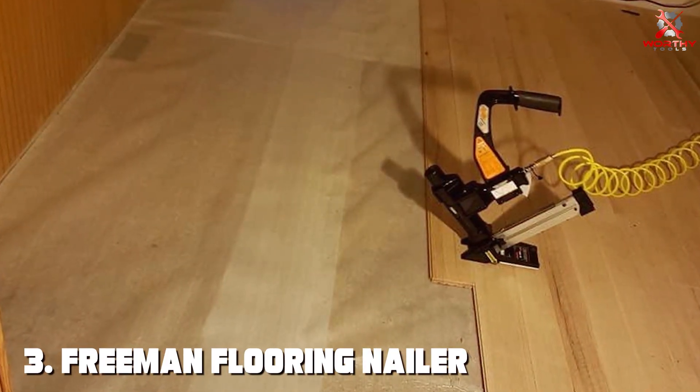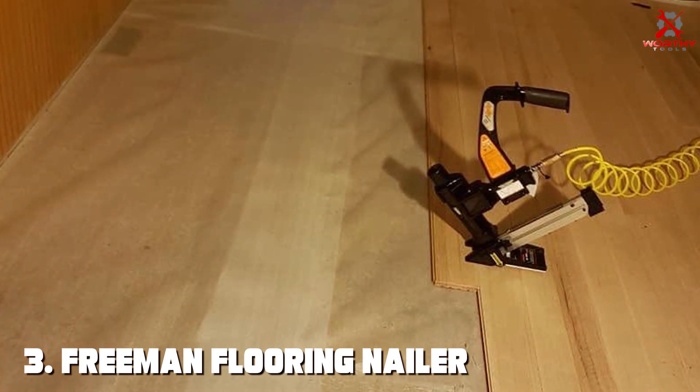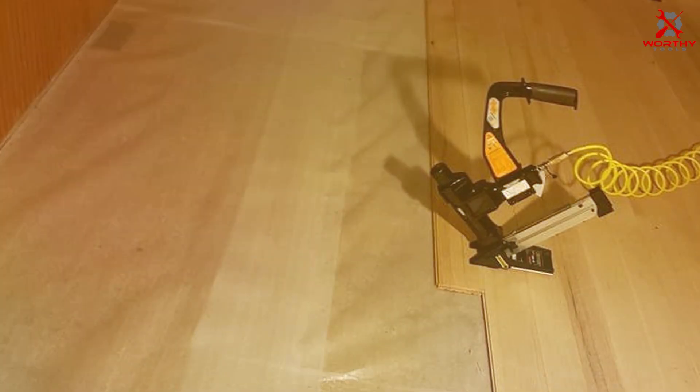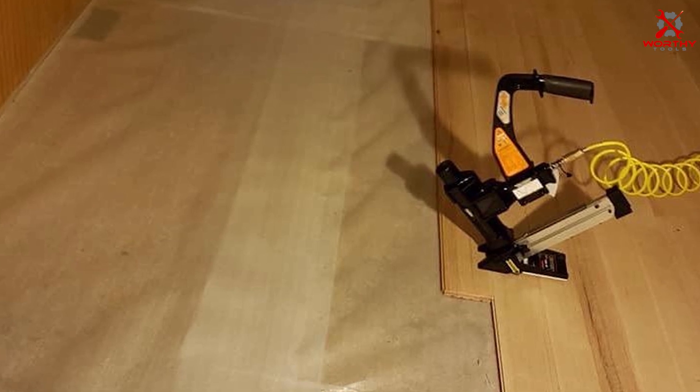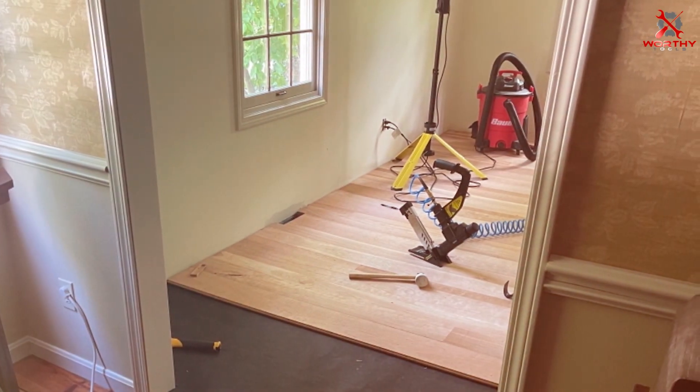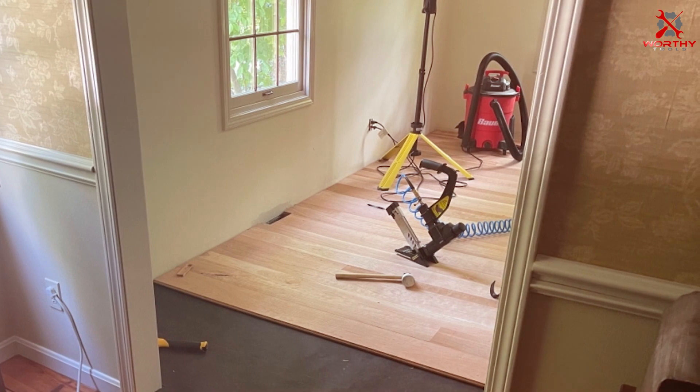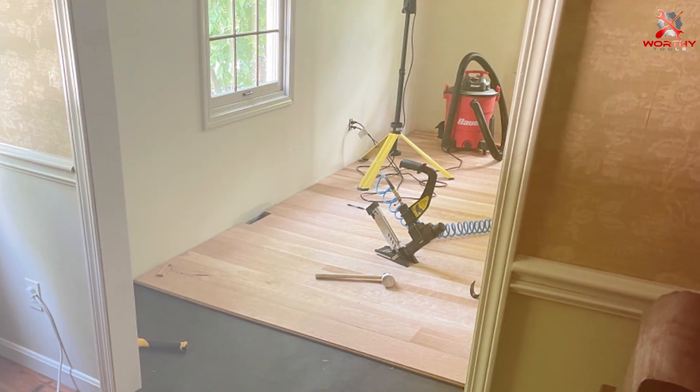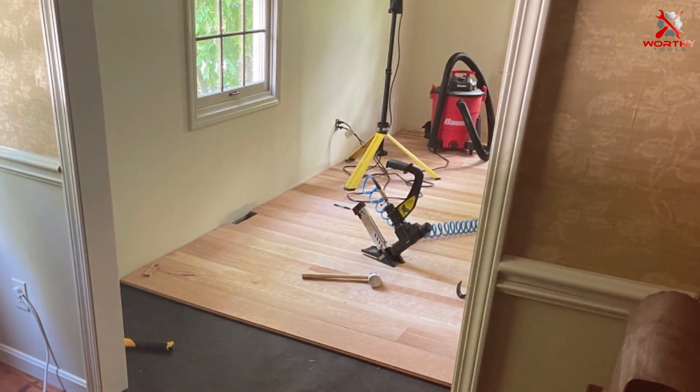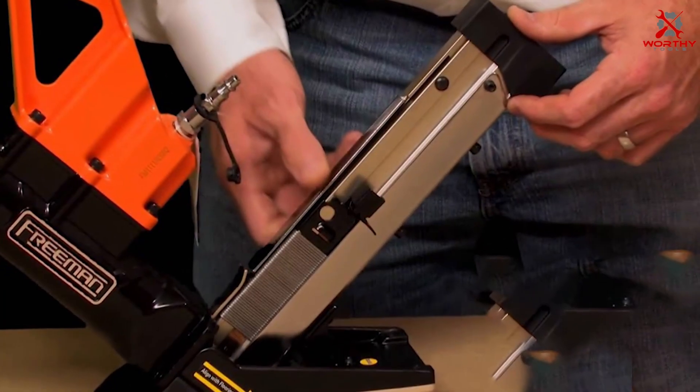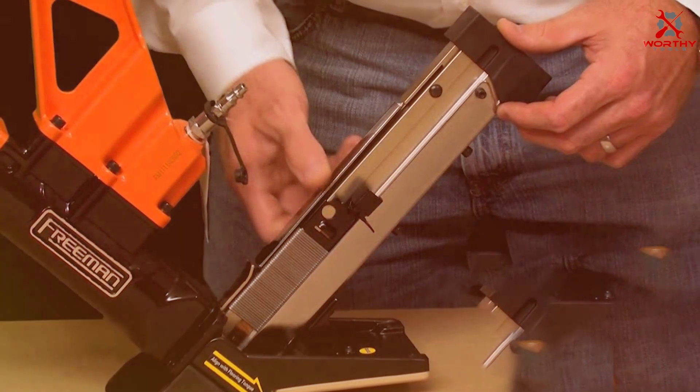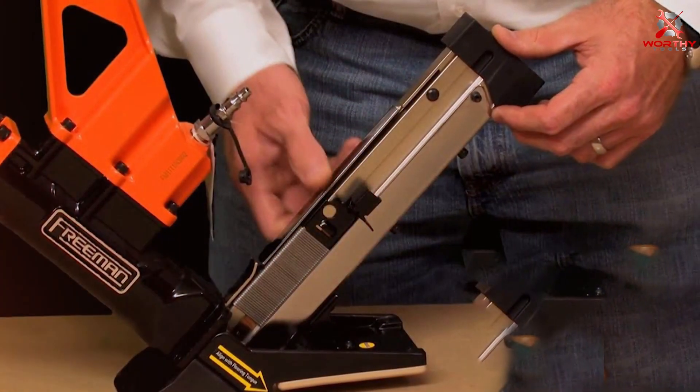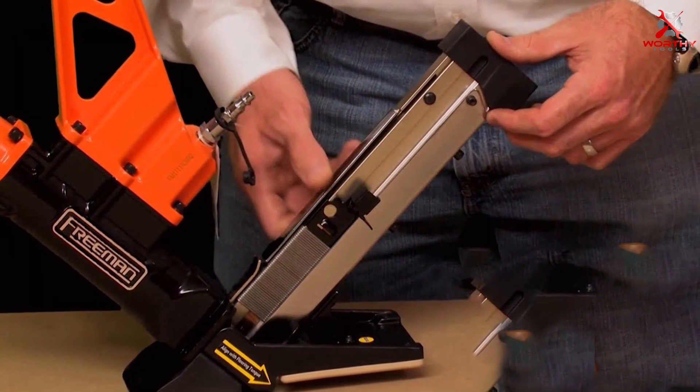Number three: Freeman Flooring Nailer Stapler PFL618BR. The Freeman PFL618BR is a dynamic and efficient flooring nailer and stapler, designed for both professional and personal use. Its 3-in-1 design accommodates staples, T cleats, and L cleats, making it a versatile choice for various flooring materials. The ergonomic design ensures comfortable handling, while the durable die-cast aluminum body guarantees longevity.